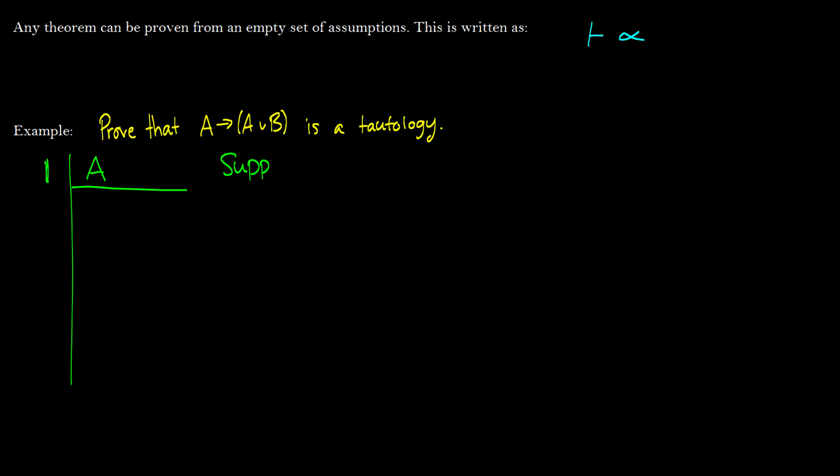So we're going to prove that A arrow A or B is a tautology. Or you can also say we're going to prove it's a theorem. Same thing. So what we do is we don't have any premises. We have to assume the antecedent as a supposition. So we always take the antecedent as a supposition and then we want to prove the consequent. So on line two, really what we do is we just do or introduction. So we're going to get A or B.